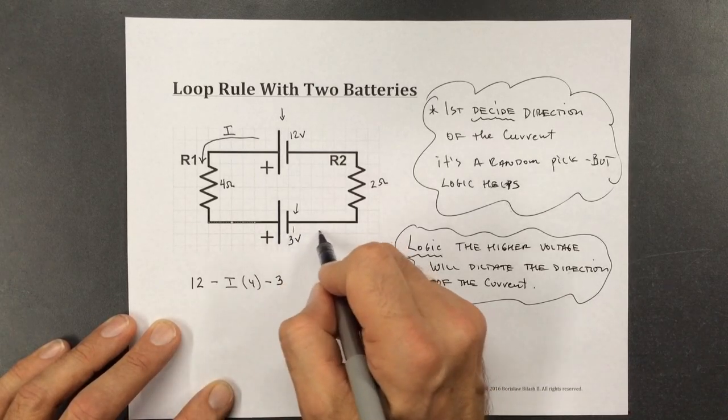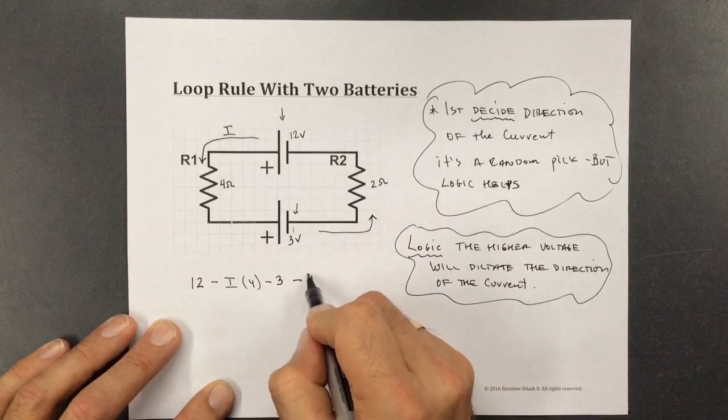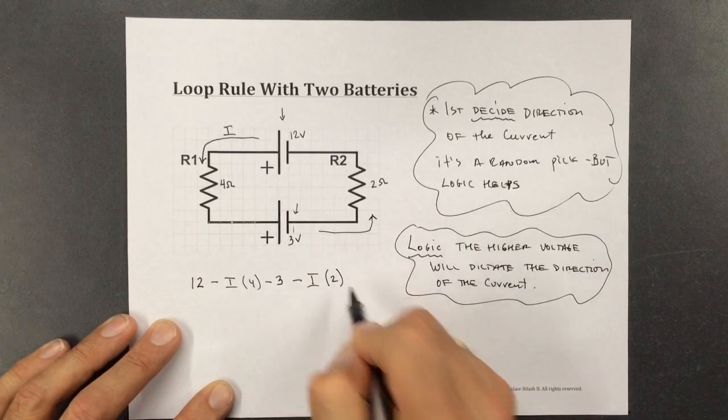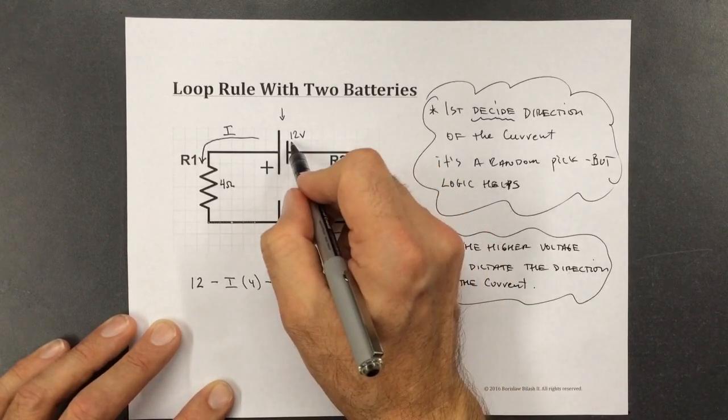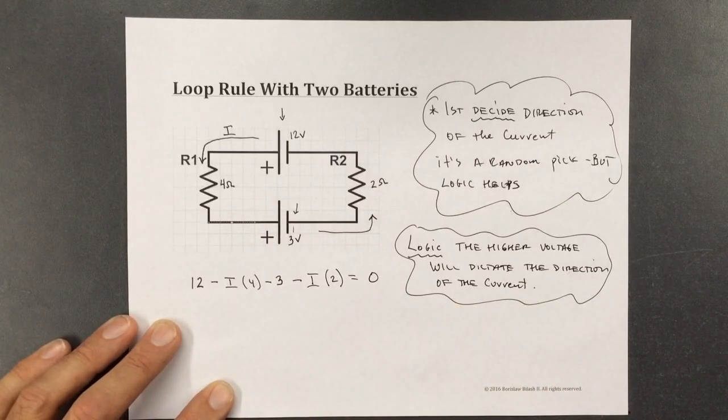So as we continue on, the current goes like that. And we encounter R2. So that's going to be minus I times 2 ohms. And then we're back to our starting point. And each of these, when added together, should equal to 0.